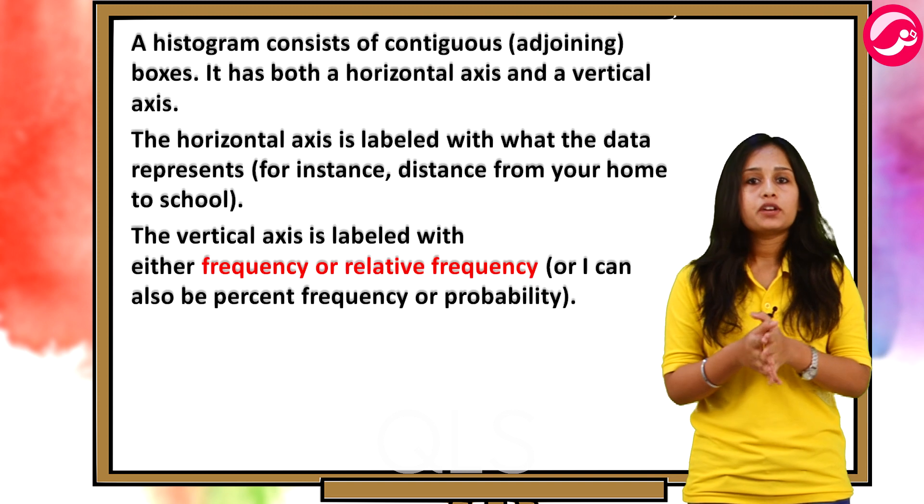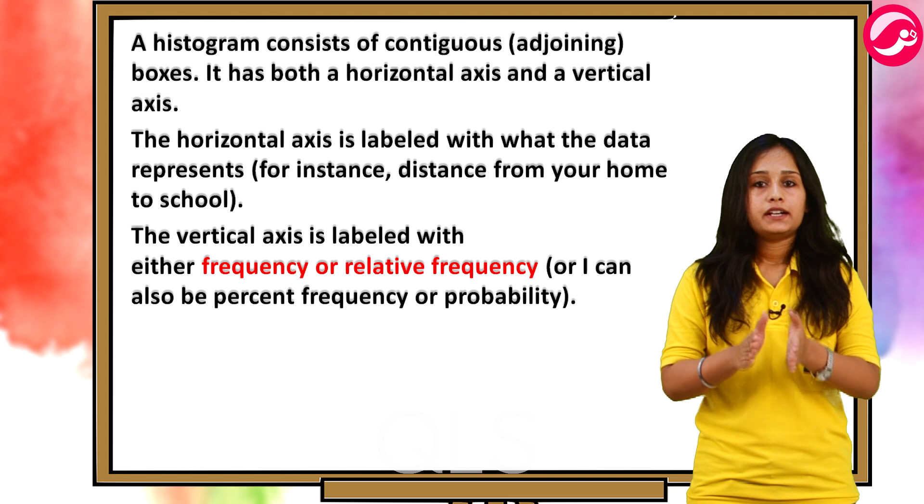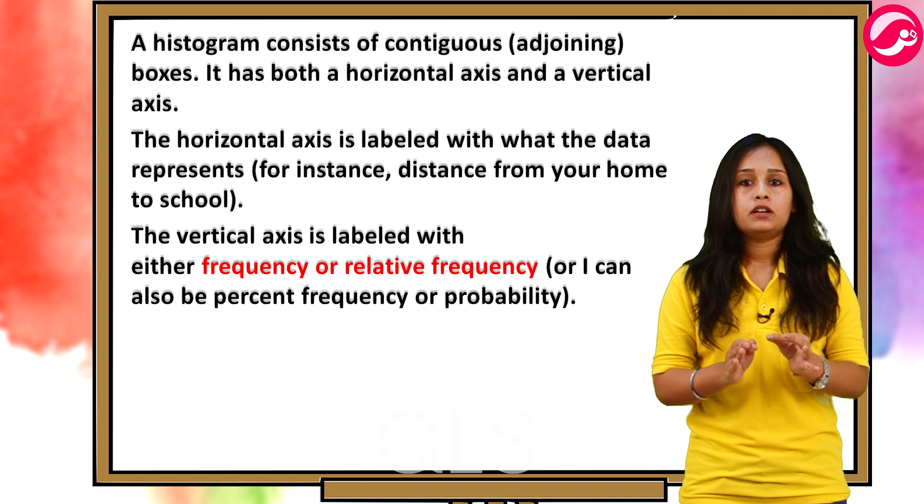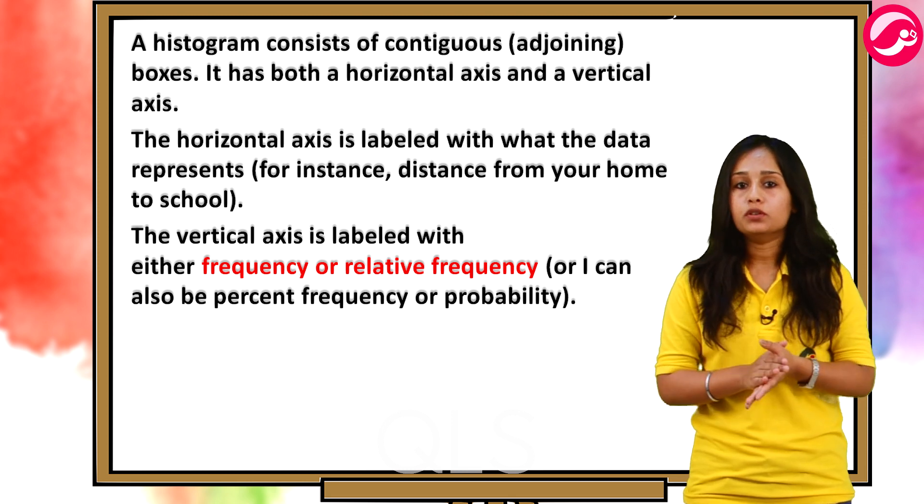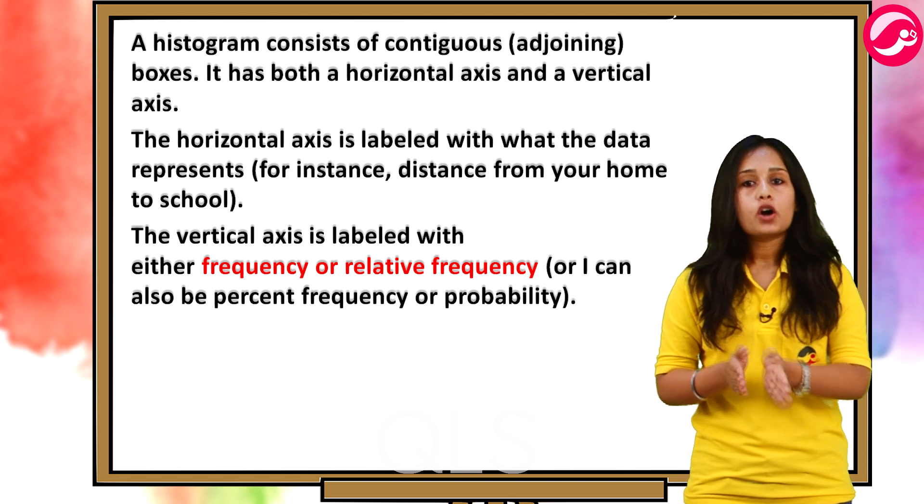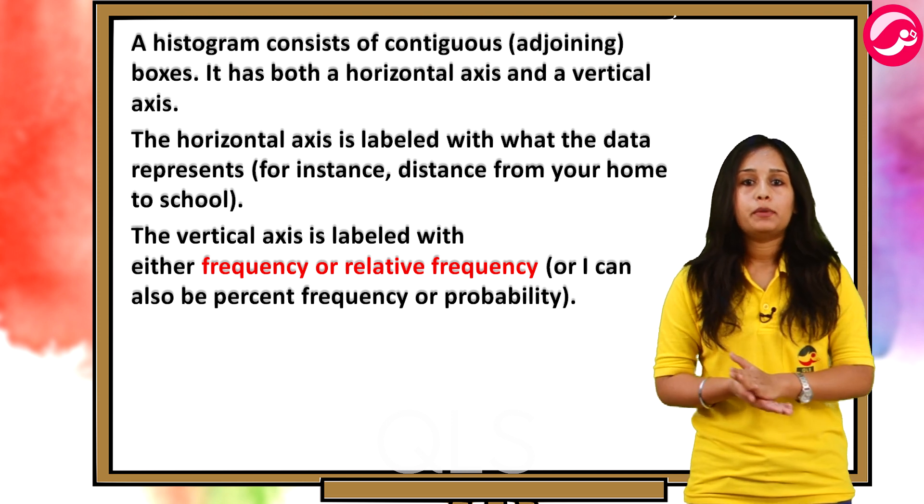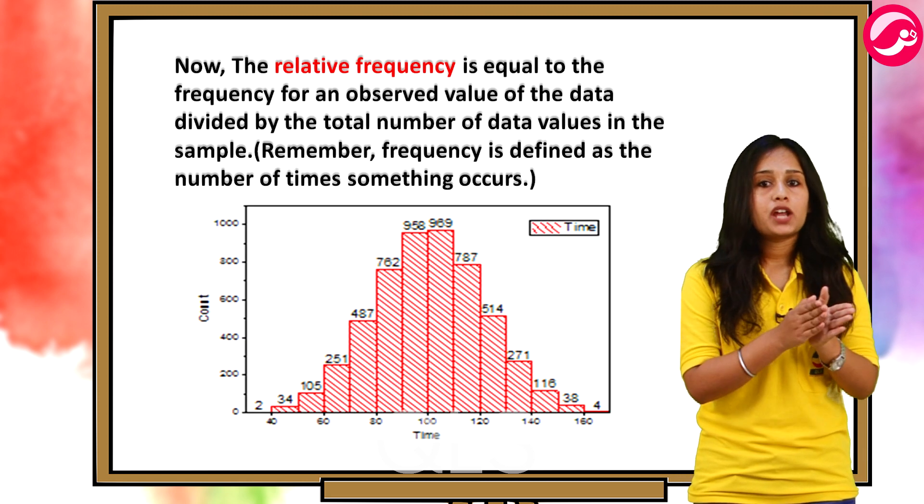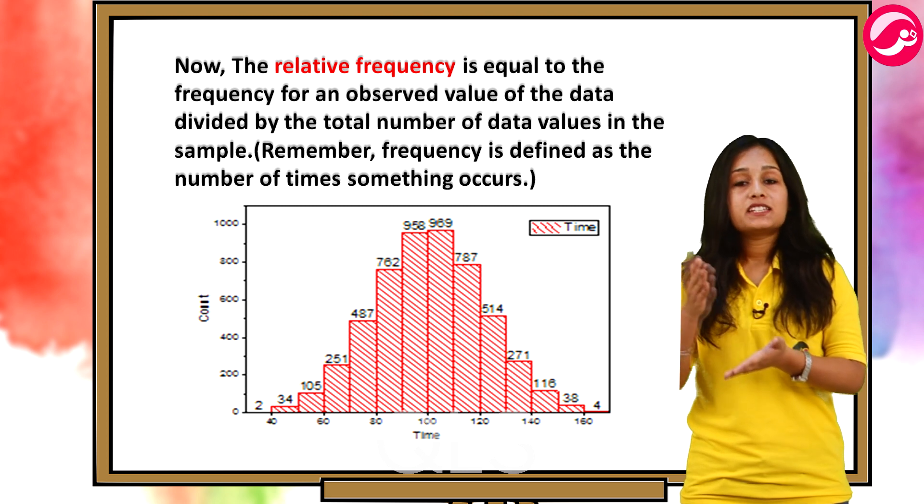Now, talking about the histogram. A histogram consists of contiguous or adjoining boxes. It has both a horizontal axis and a vertical axis. The horizontal axis is labeled with what the data represents. For instance, distance from your home to your school. The vertical axis is labeled with either frequency or relative frequency or it can also be percent frequency or probability. The graph will have the same shape with either label. The histogram can give you the shape of the data, the center and the spread of the data as well.